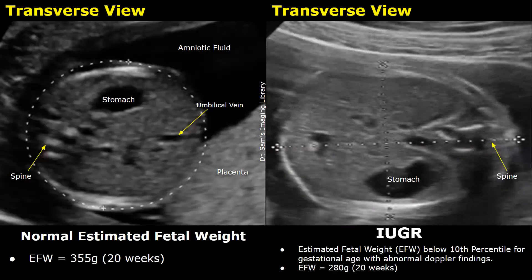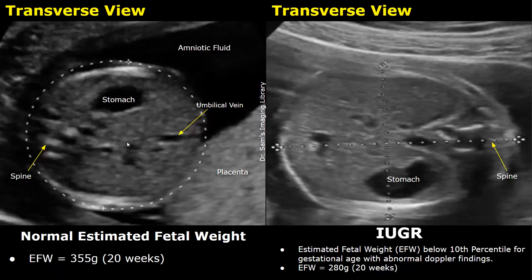Another feature of IUGR is an estimated fetal weight below the 10th percentile for gestational age, with abnormal Doppler findings. Estimated fetal weight is a collective measurement of biometric parameters, so we can refer to it instead of looking at biometric parameters individually. The normal EFW at 20 weeks is around 355 grams; in an IUGR fetus, the fetal weight in this case was 280 grams at 20 weeks, which is less than the 10th percentile and suggests growth restriction.